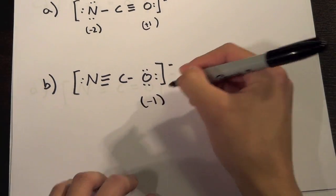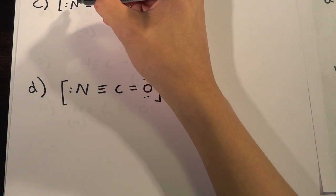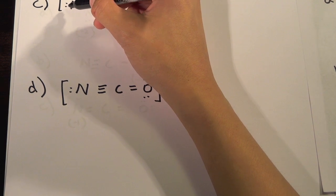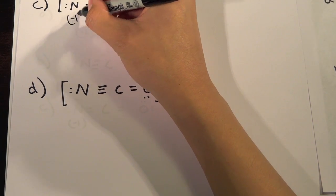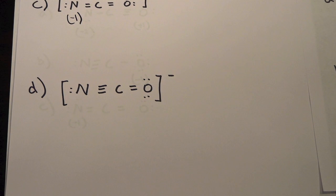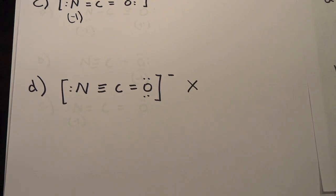And then C, we'll try it, it's in group five so five minus these four electrons minus the two will be minus one. And C will be zero and O will also be zero.